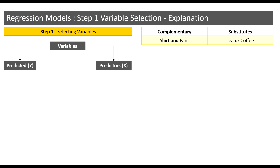An example of substitutes is tea or coffee. There are tea drinkers and coffee drinkers, and very rarely will you come across people who are fine with both beverages. For example, I love coffee but my mom loves tea. We can understand when two things are complementary when we use the word 'and' in between, like shirt and pant — there is some interdependence. And we can say that two things are substitutes when we use the word 'or', like tea or coffee.